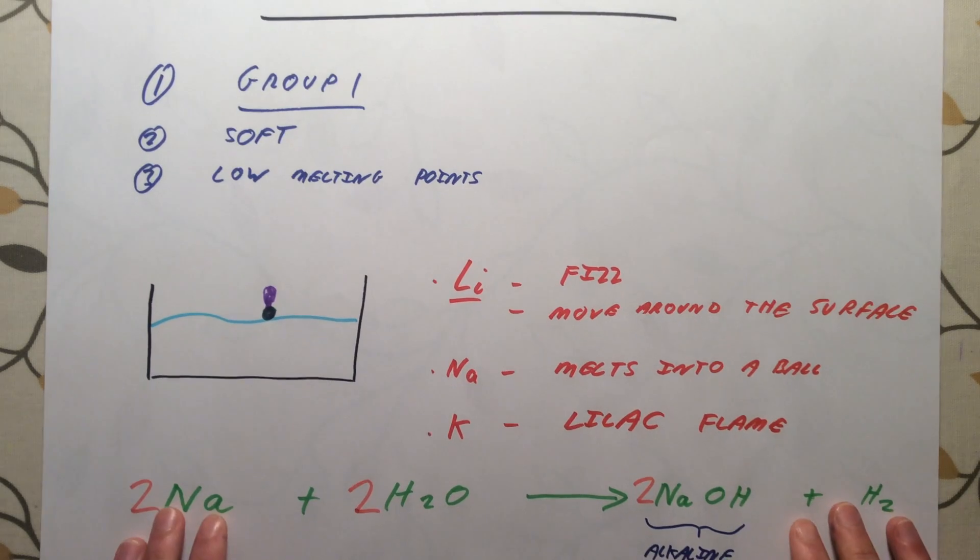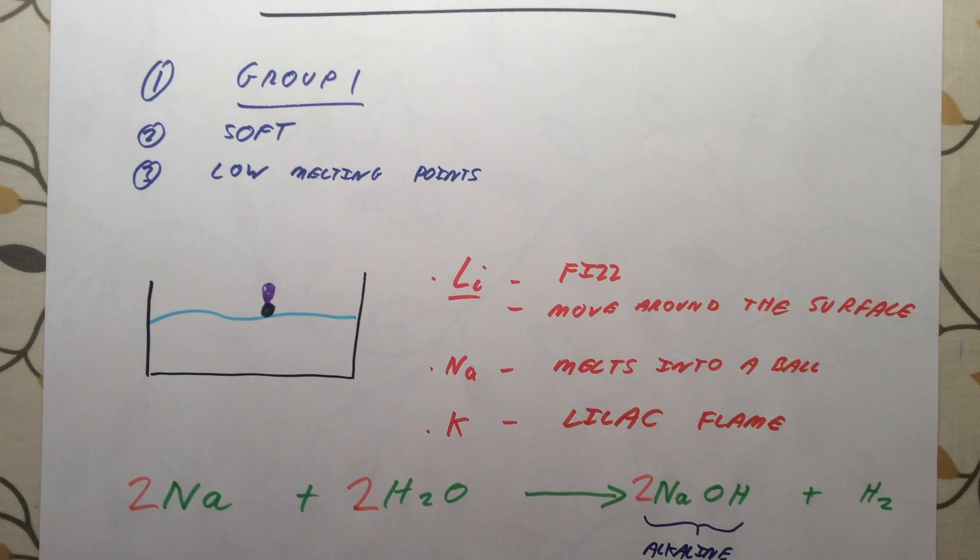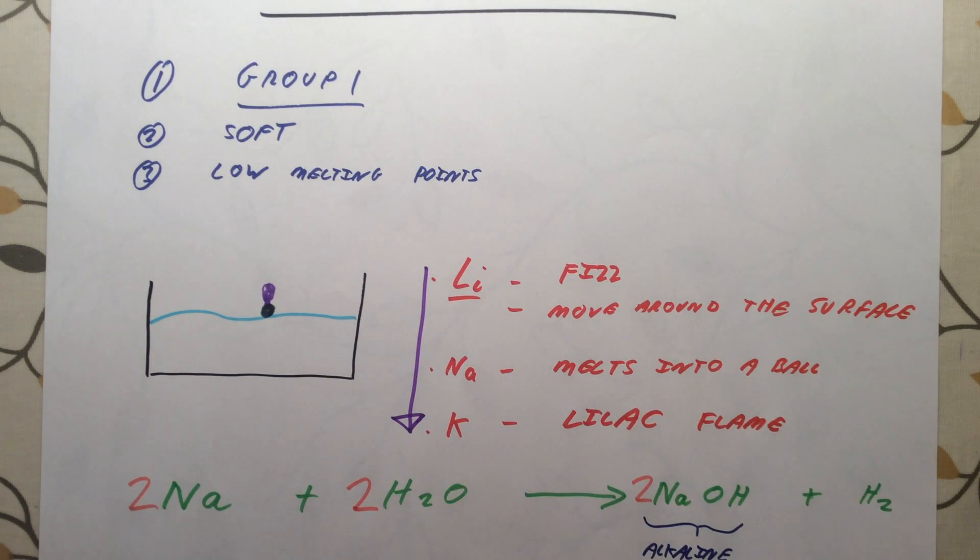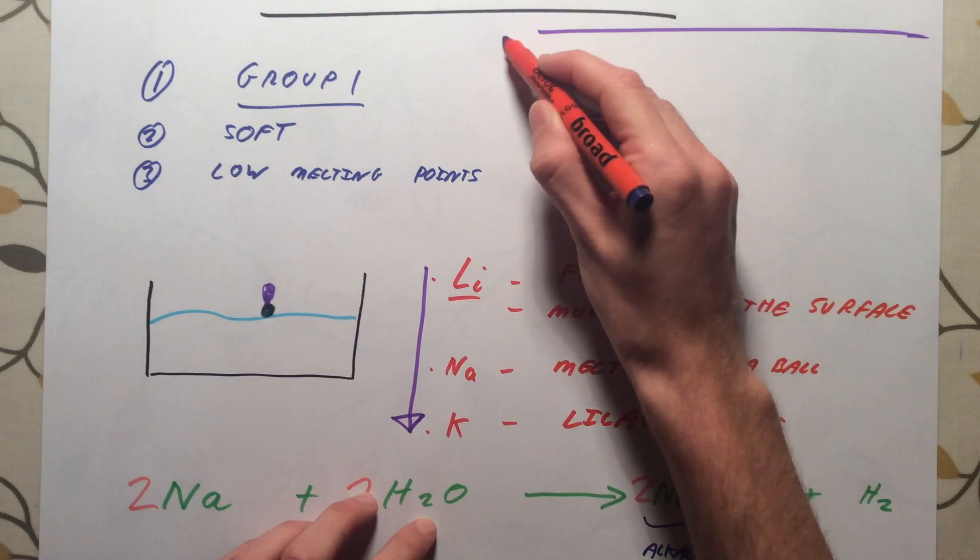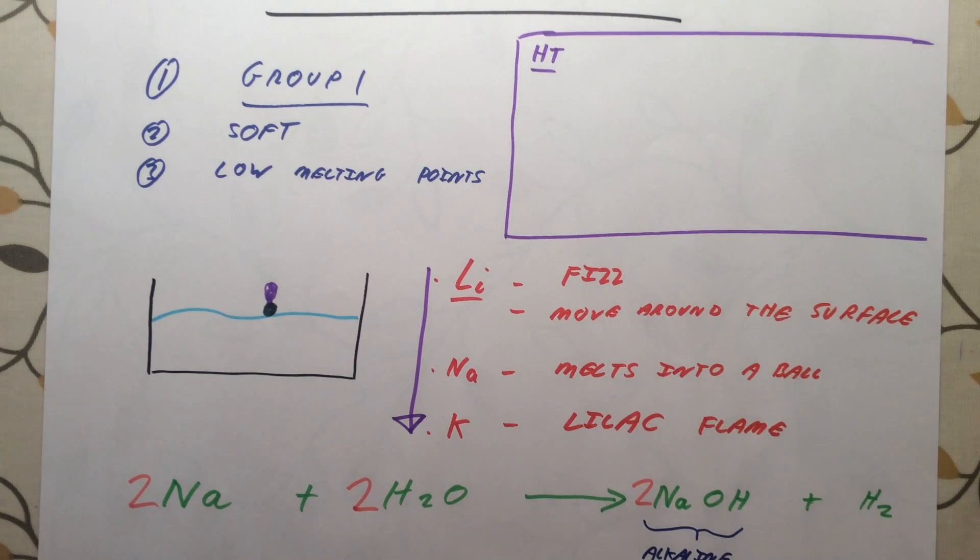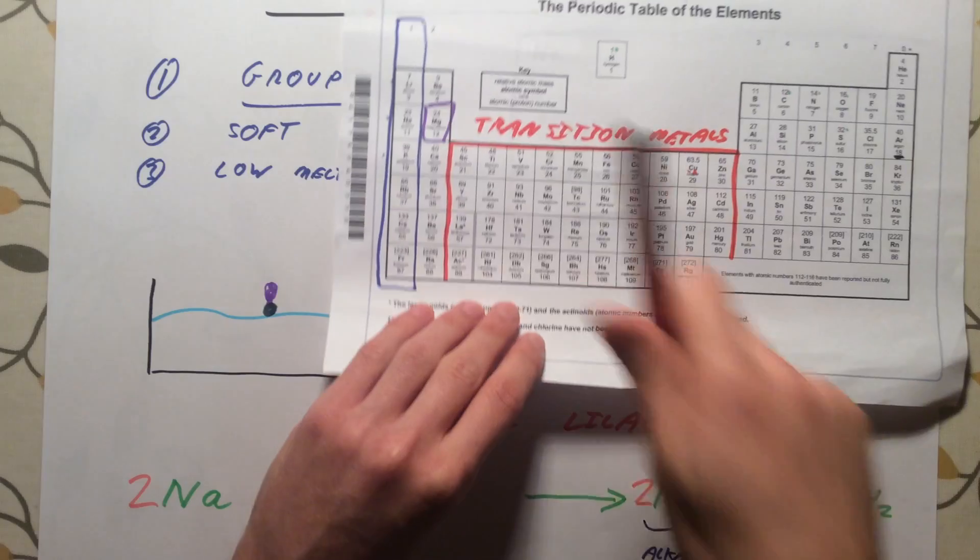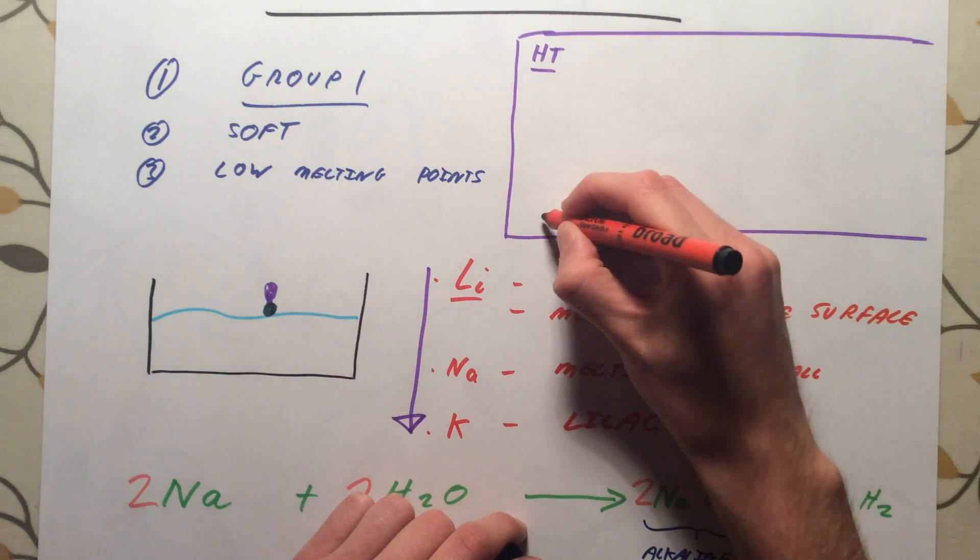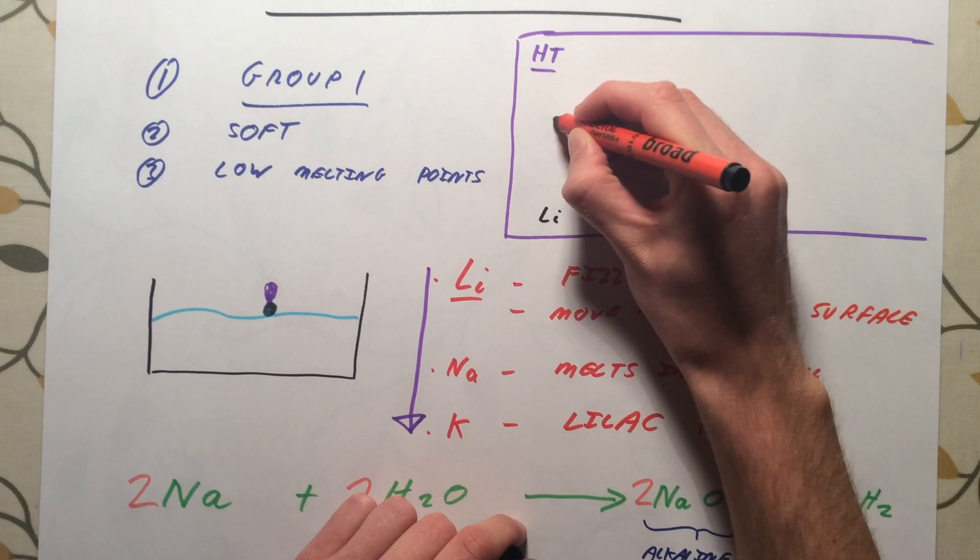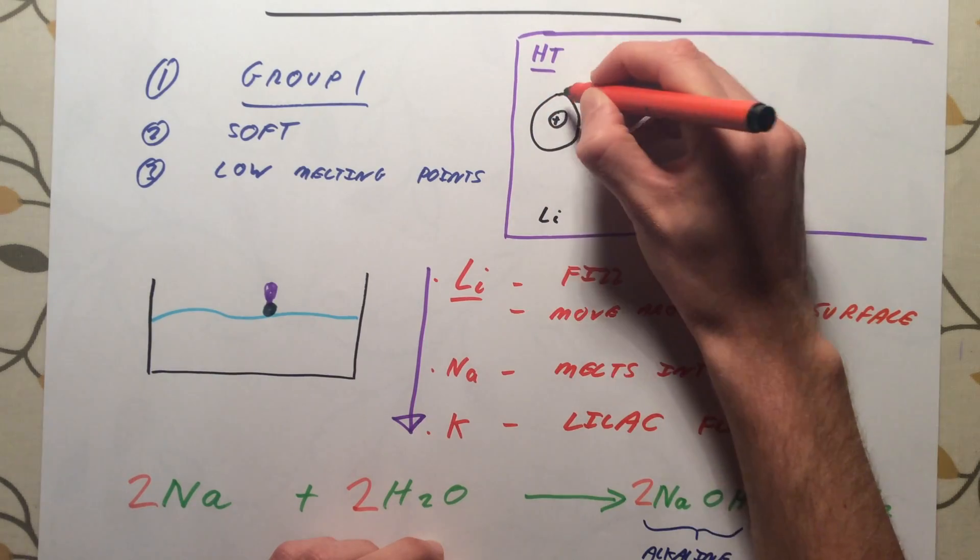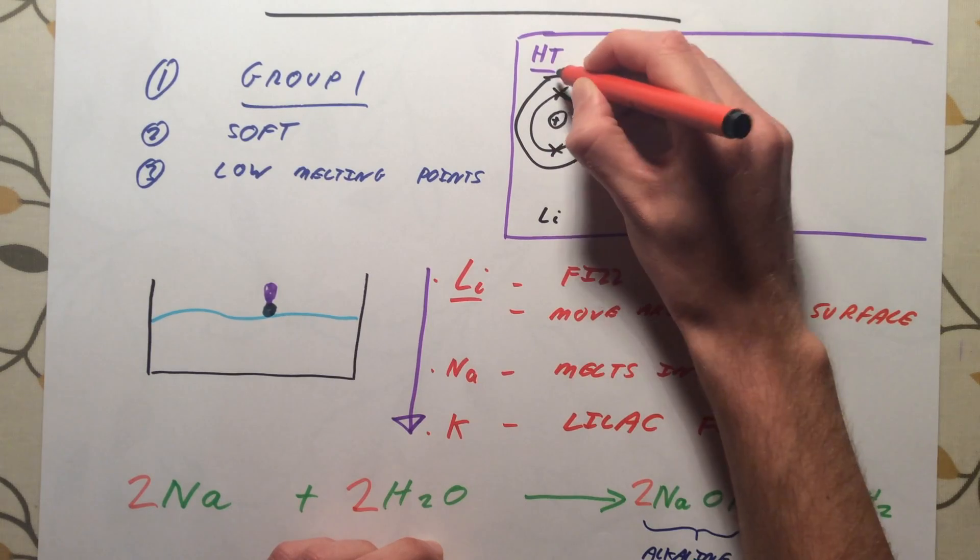For higher tier, we also need to be able to explain why these elements seem to get more reactive as they go down group one. I'm going to put a purple higher tier only box up here. If I were to draw out the atomic structure of lithium, which has got three electrons, I'm just going to put Li at the bottom. I'm just going to show the nucleus of this atom as a plus. Obviously, it will have protons and neutrons in there. In my first shell of electrons, I'm going to have two electrons, and in my second shell, I'm going to have one.